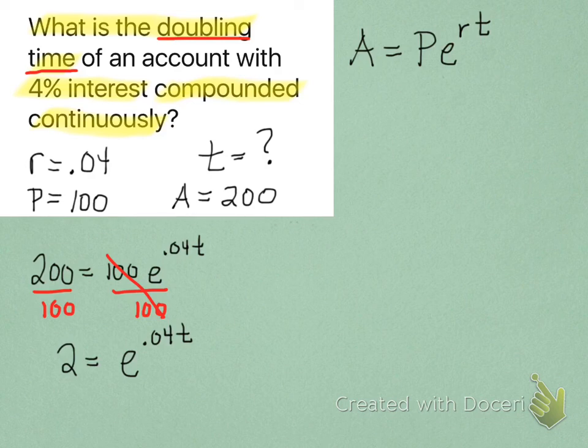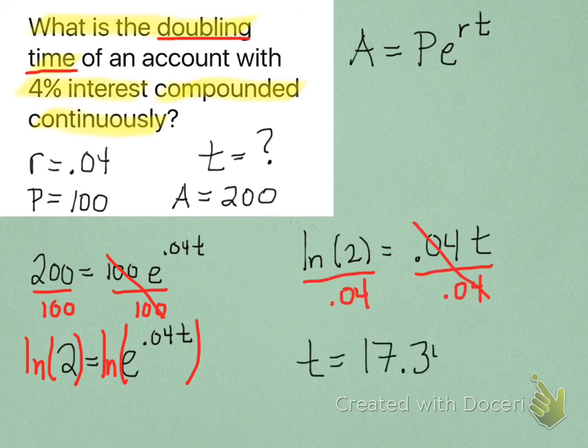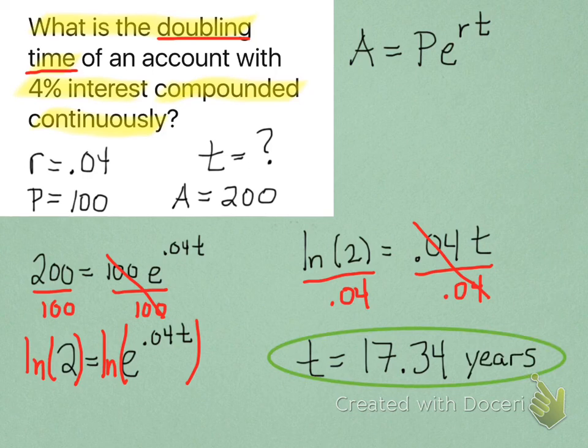This is what you come up with. Now, to solve for T, take natural logs of both sides of the equation. Natural log and E are inverses, so the ln and the E cancel each other out, and this is what you end up with. Now, just divide both sides by 0.04, and there's your T, 17.34 years.